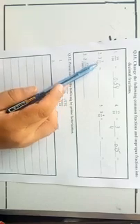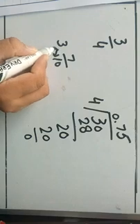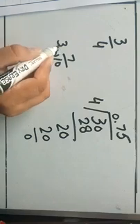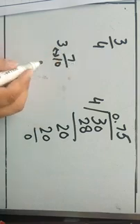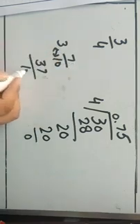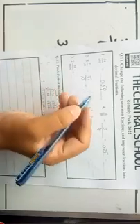Next, 3 whole 7 over 10 is given — this is a mixed number. First, we will convert it into an improper fraction. We multiply 10 by 3 to get 30, then add the numerator 7: 30 plus 7 equals 37. So it becomes 37 over 10.